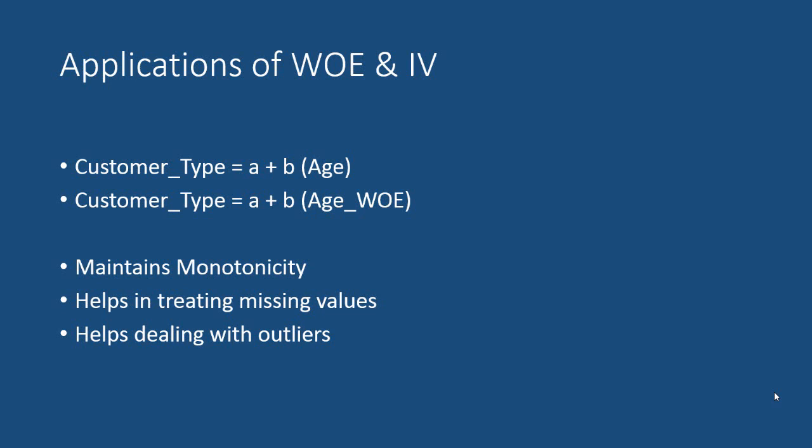In this video, I am going to discuss the applications of the weight of evidence and the information value. In the previous videos, we have seen how to calculate the weight of evidence and the information value. So the question arises: why do we use the weight of evidence and the information values? How does it help us in building better statistical models?